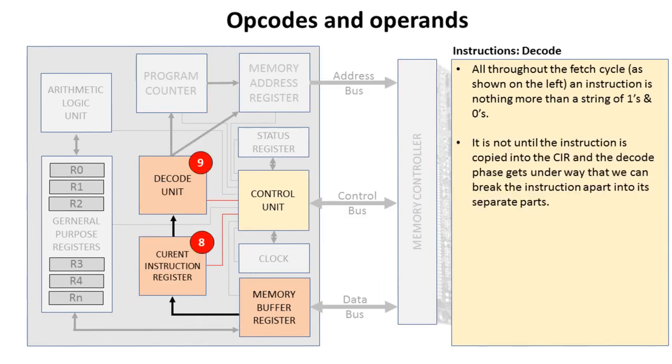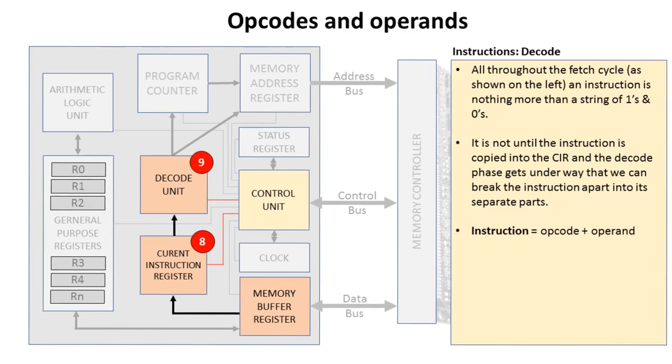It's not until the instruction is copied into the current instruction register and the decode phase gets underway that we can break the instruction apart into its separate sections. The instruction is made up of two main bits, the opcode and the operand. And that's the focus for the rest of this video.